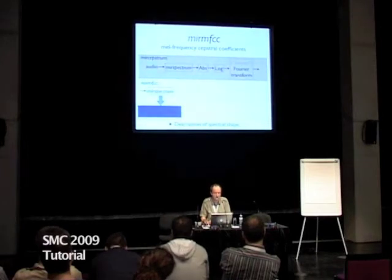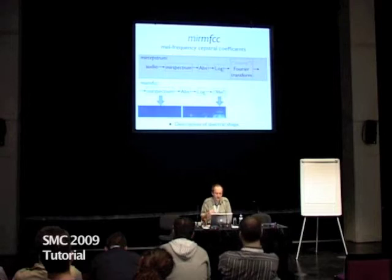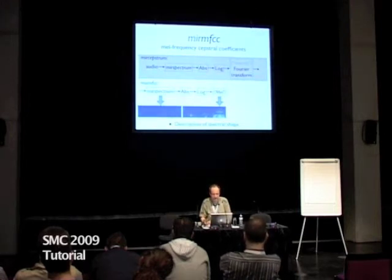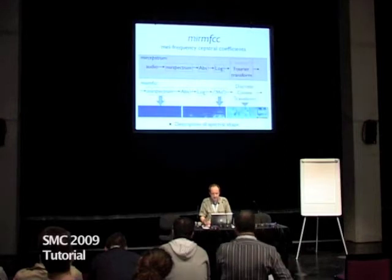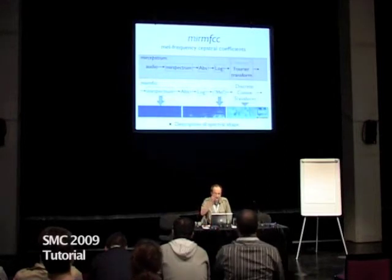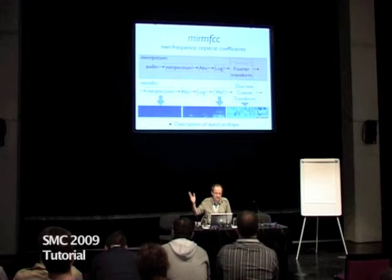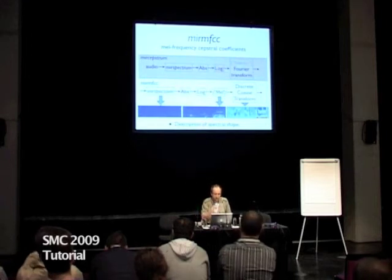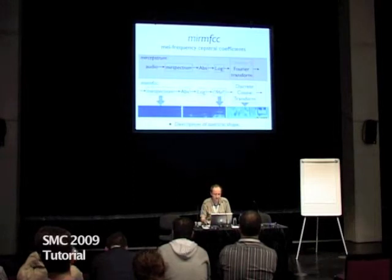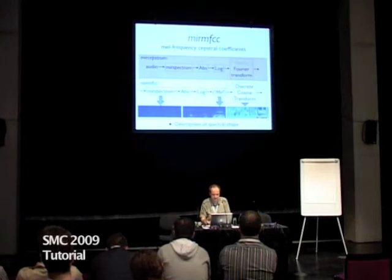For MFCC, again we compute the spectrogram with a logarithm. Then decomposition into mel bands to have auditory modeling. And instead of a Fourier transform used to see harmonicity in the FFT, here we just want to have a description of the spectral shape. Usually we use the discrete cosine transform because it gives a compact description of this spectral shape. So now we have the MFCC.